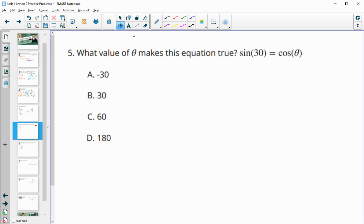Number five, what value of theta would make this equation true? So remember, sine and cosine, if these numbers add to 90, then they're equal to each other because they'd be opposite angles in a right triangle. So we know that theta would equal 90 minus 30. So theta is going to be 60 and then these would be the same. Then the sine and the cosine would equal each other.